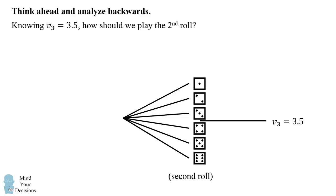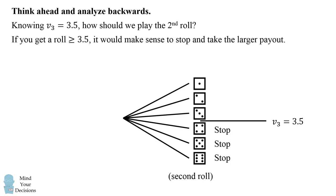Knowing the third roll gives an average of 3.5, how should we play the second roll? Well, let's think about this logically. If you get a roll that's larger than 3.5, it would make sense to stop and take the larger payout. Because rather than getting an average of 3.5, we're actually getting something more than 3.5. So if we roll a 4, 5, or 6, we should stop at the second roll.